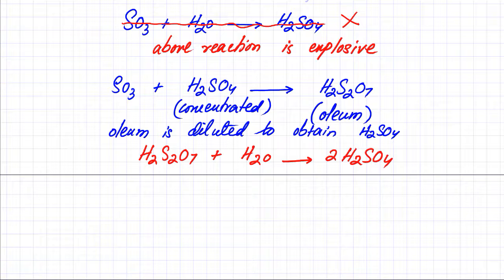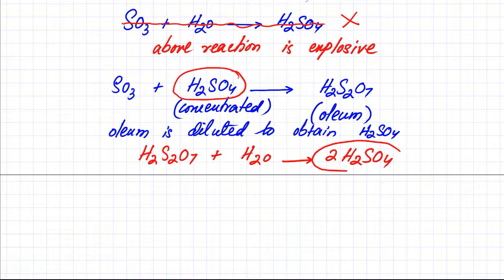One interesting thing about this is that you're using sulfuric acid to make sulfuric acid. But one molecule of sulfuric acid is used in the process and in the end you obtain two molecules of H2SO4. So the net result is that you are producing sulfuric acid by diluting oleum.